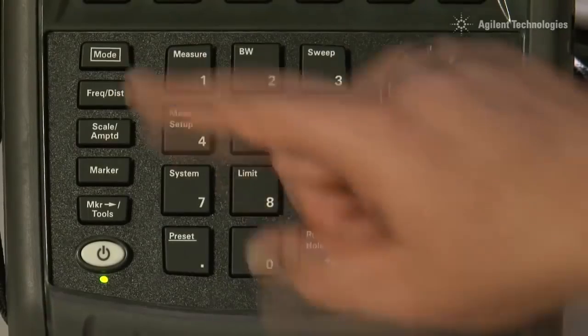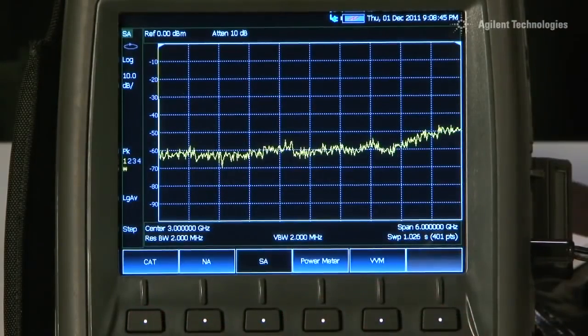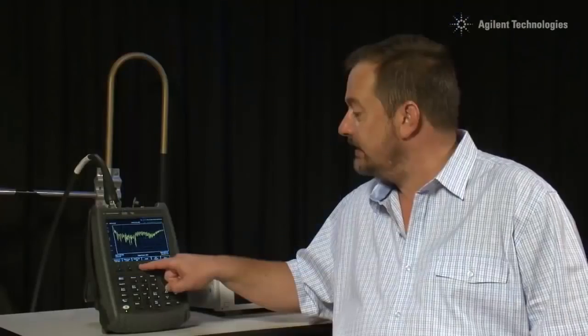We just disconnect the cable from the transmitter at the bottom of the mast and connect it directly to the FieldFox. So I will press Mode and select CAT for cable and antenna test and return loss in dB that is already selected.